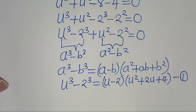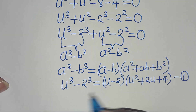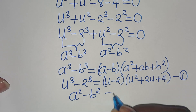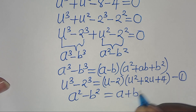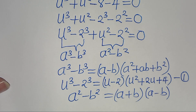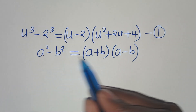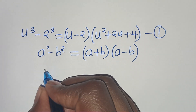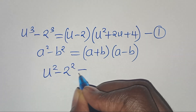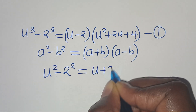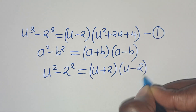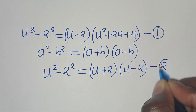The second part is the difference of two perfect squares. Using the identity a² - b² = (a + b)(a - b), we have u² - 2² = (u + 2)(u - 2). Let's call this equation 2.